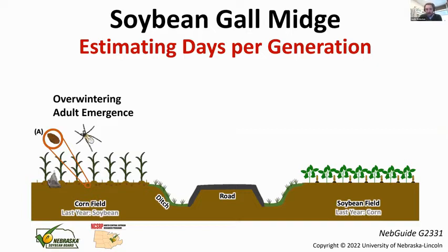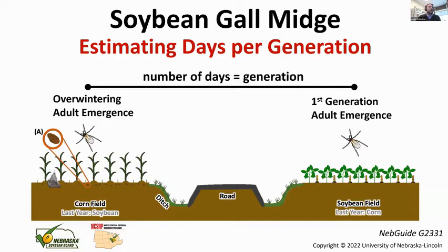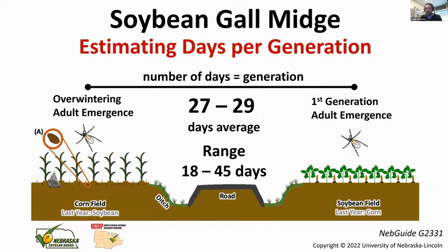Vilma Montenegro has done a lot of work on seasonal larval abundance of soybean gall midge. Sampling plants every three days throughout the entire season in Saunders County Nebraska, on the y-axis is number of larvae per three plants. Things start off relatively low and then pick up in late July and early August, getting pretty low once we get into September. Estimating the number of generations: the length of time between overwintering adult emergence and first detection in this year's soybean field gives a rough generation estimate of 27 to 29 days on average, with a range of 18 to 45 days depending on planting date and other factors.